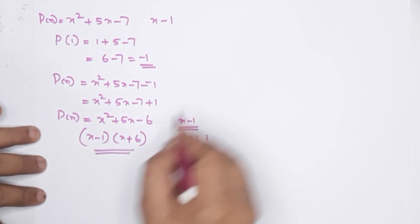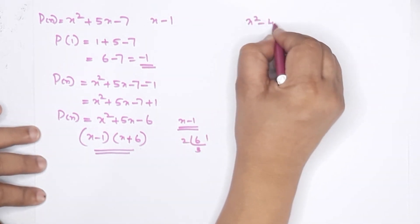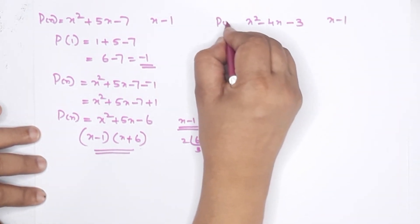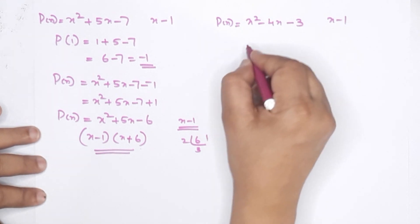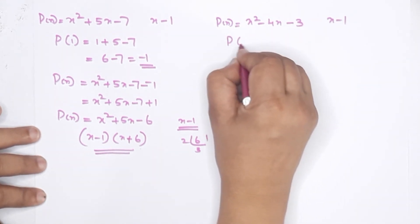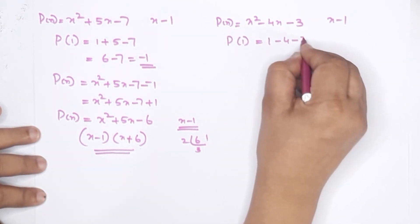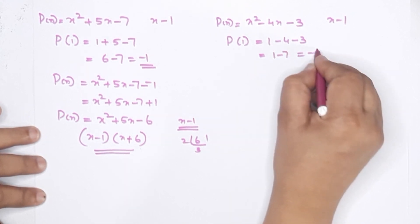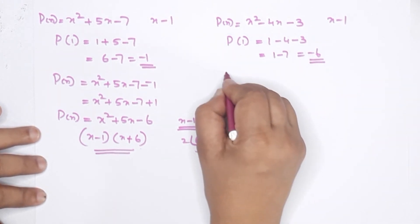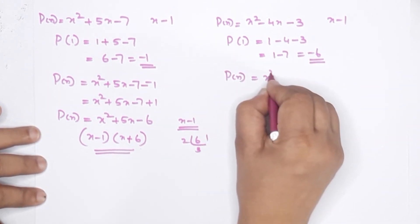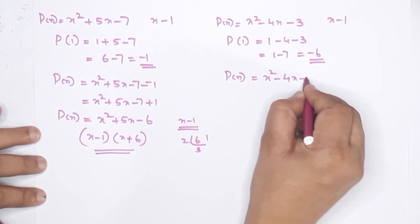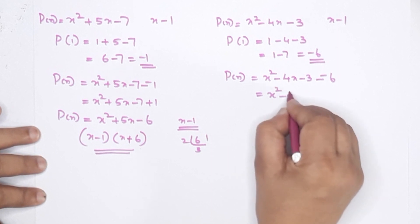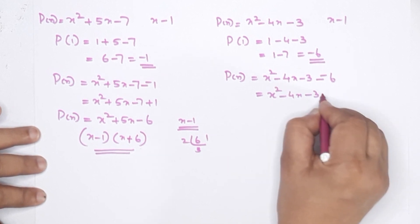The next question: x squared minus 4x minus 3, and x minus 1 is a factor. What should we subtract from this polynomial? P of 1 equals 1 minus 4 minus 3, which is 1 minus 7, equal to minus 6. So P of x equals x squared minus 4x minus 3 minus negative 6, giving x squared minus 4x minus 3 plus 6.